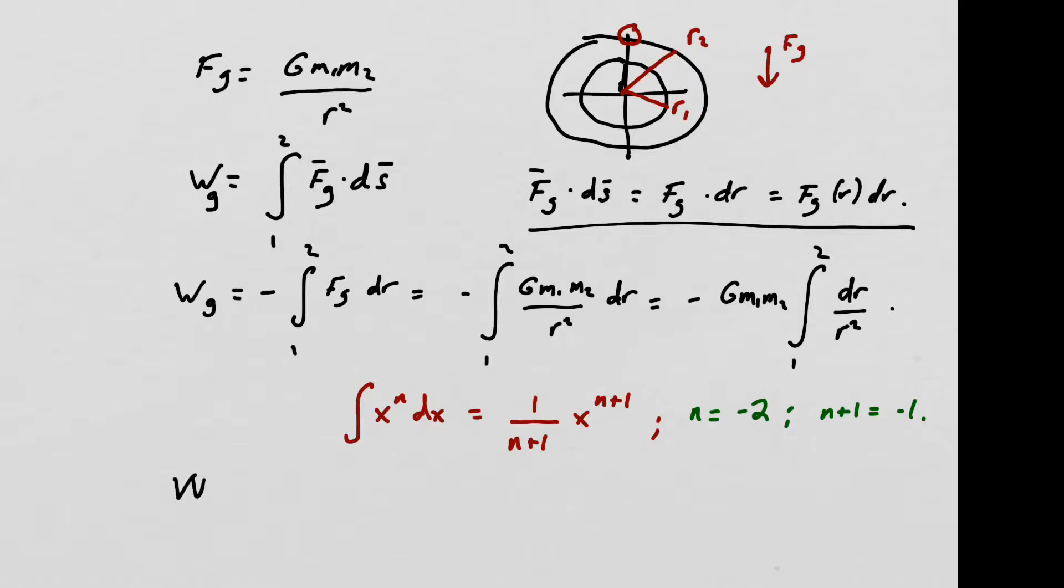So, plugging those in to the integral, we see that the work done by gravity is going to be negative g, m1, m2. And we evaluate the integral to give us a negative 1 times 1 over r evaluated at the limits from r1 to r2. The negative signs cancel, and so this gives us a negative g, m1, m2 over r evaluated from 1 to 2. And let's stop there for a moment to analyze this.